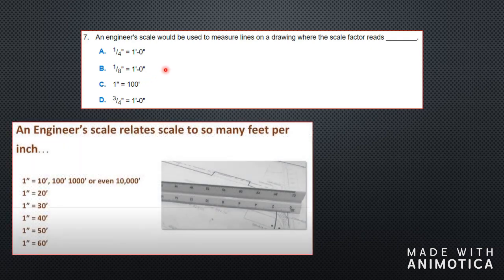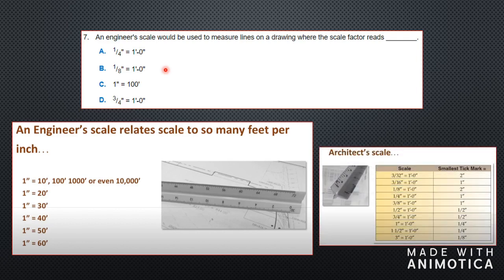Here is an example of an engineer scale — the ratios go from 10, 20, 30, 40, 50, 60, up to a hundred, a thousand, or even 10,000 depending on the size of the project. An engineer can measure smaller projects up to 10 feet or very large projects up to 10,000 feet. The difference is that the architect scale only measures by feet, going feet by feet. The engineer scale lets you measure by per hundred feet or per thousand feet.